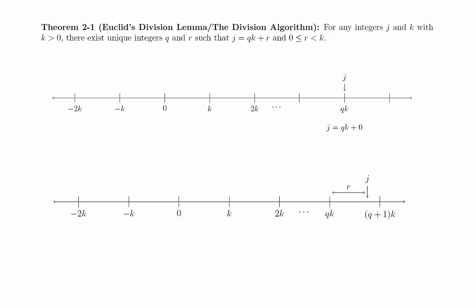Clearly, this is less than k, since k is the size of the gap between q k and q plus 1 times k. With this, we can clearly see that j is equal to q k plus r.